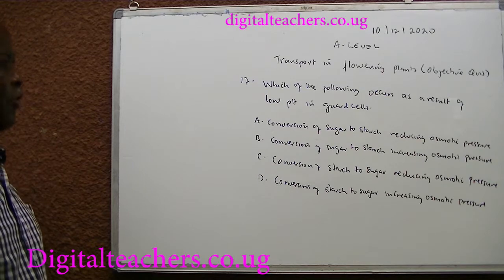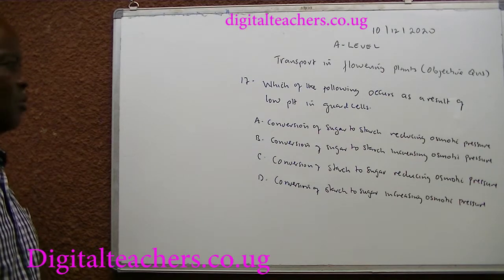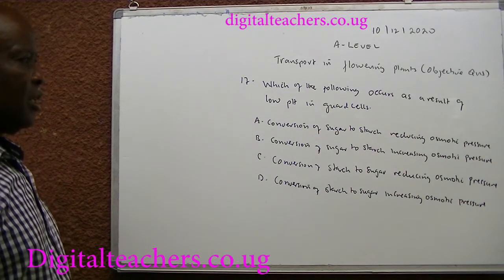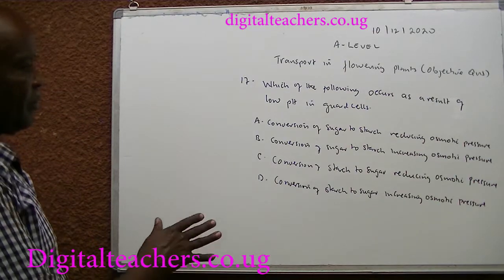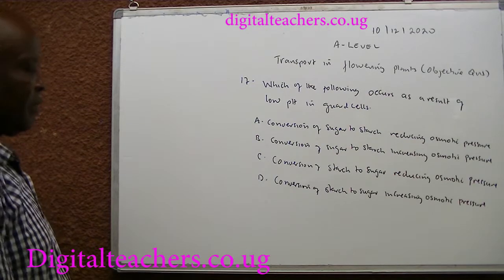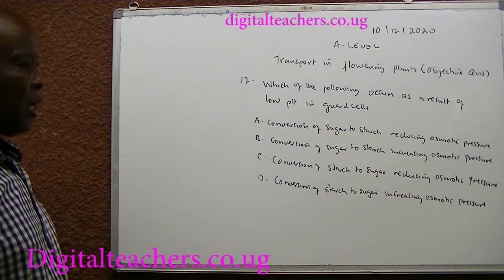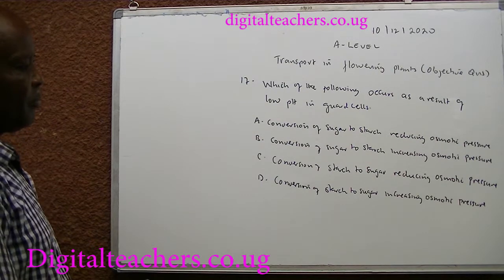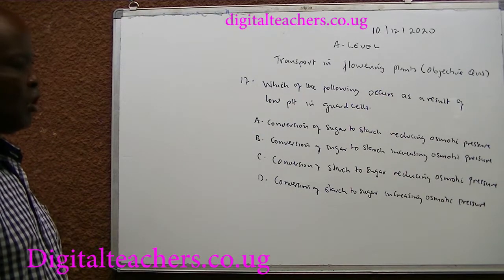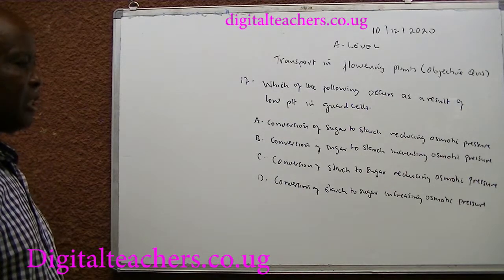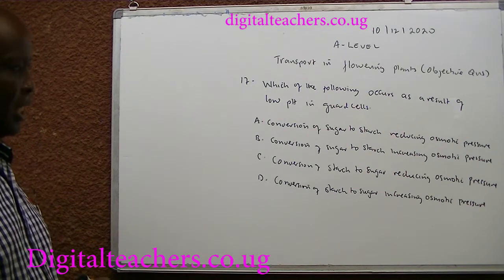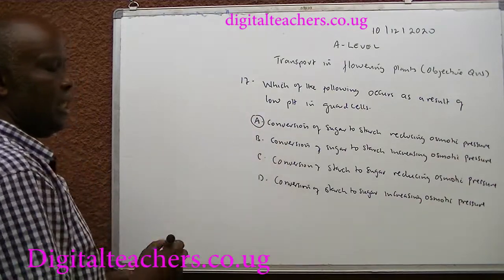Number 17. Which of the following occurs as a result of low pH in guard cells? A. Conversion of sugar to starch, reducing osmotic pressure. B. Conversion of sugar to starch, increasing osmotic pressure. C. Conversion of starch to sugar, reducing osmotic pressure. D. Conversion of starch to sugar, increasing osmotic pressure. You can pause and answer. The answer is A.